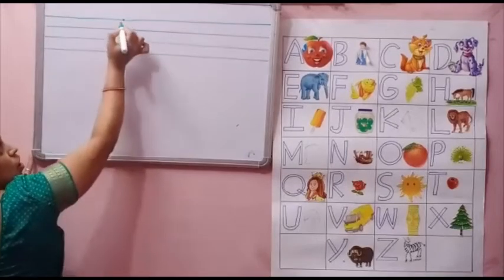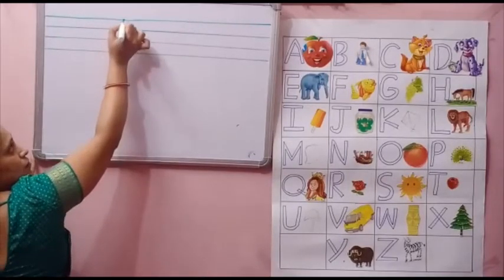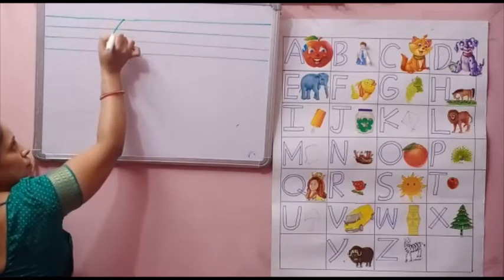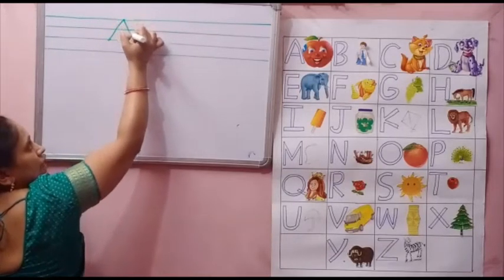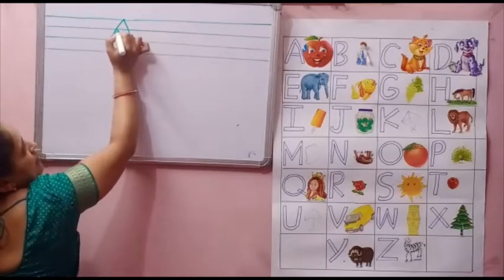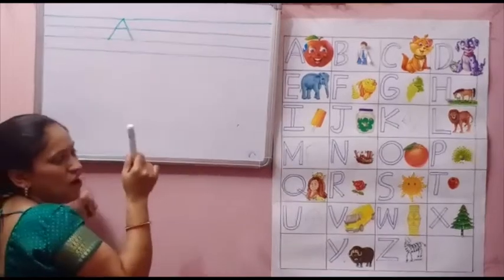Okay, now start. Now up to down slanting line. Up to down slanting line. Again repeat slanting line. And within slanting line. A. A for apple.